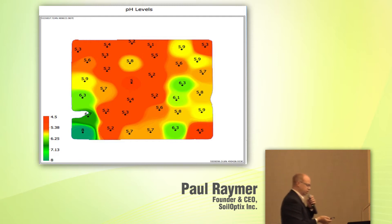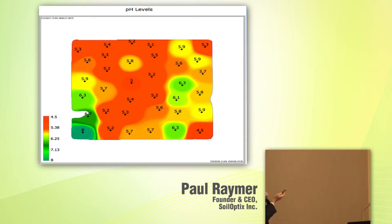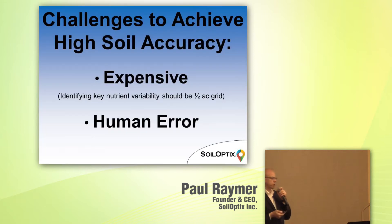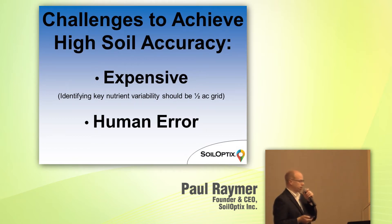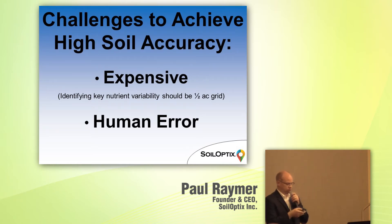We take the numbers that come back from the lab after those soil samples are collected, run them into software, and in fairness to the software, we're giving it the task of interpolation — creating zones from very limited data points. If we want finer resolution, it gets expensive. One soil scientist I know suggests a half-acre grid for real nutrient variability, but that can escalate to $75 or $80 an acre. There's also a level of human error from the point of collection all the way to the lab.